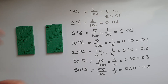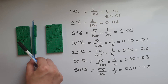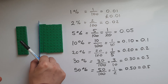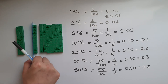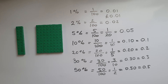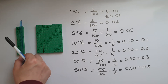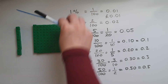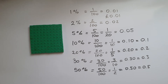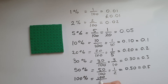60 percent is going to be 6 out of 10. 70 percent is going to be 7 out of 10 or 70 out of 100. 80 percent is going to be 8 out of 10 or 80 out of 100. 90 percent is going to be 9 out of 10. 100 percent is the whole thing — it's 100 out of 100, and that is just 1.